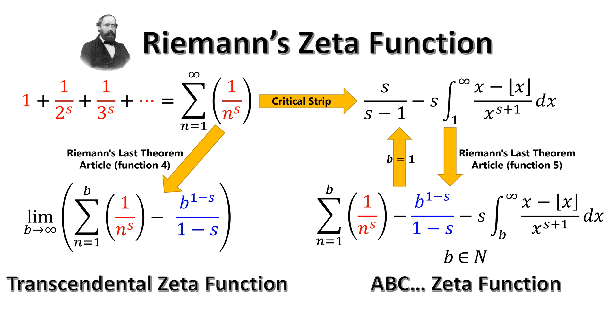b equals one gives us Riemann's zeta function, and b equals infinity gives us the transcendental zeta function. This means we can put Riemann's zeta function and the transcendental zeta function in a one-to-one correspondence in the critical strip.